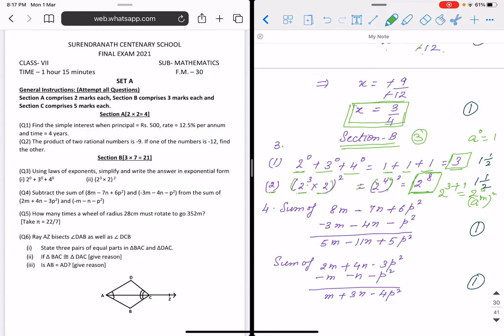Fourth question has 3 steps. First, we find out sum of algebraic expression 8m minus 7n plus 6b square minus 3m minus 4n minus b square. I am writing column wise. You can write horizontal also, but better write vertically so it's easy to add or subtract like terms. 8 minus 3 is 5m. Minus 7 minus 4 is minus 11n, plus 6 minus 1 will be 5b square.